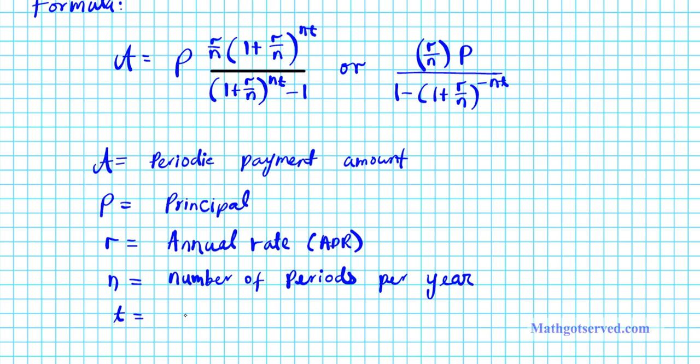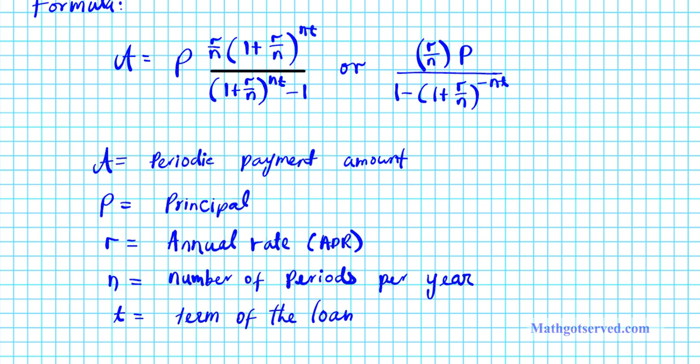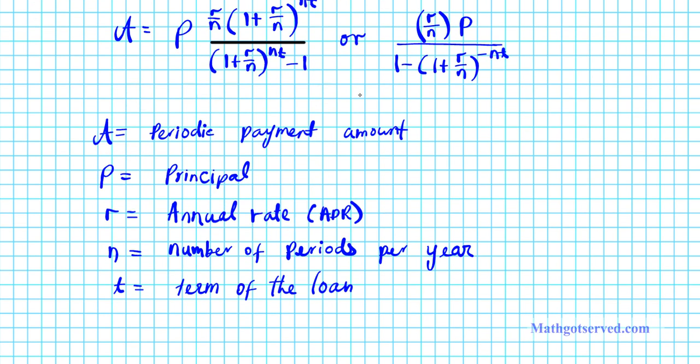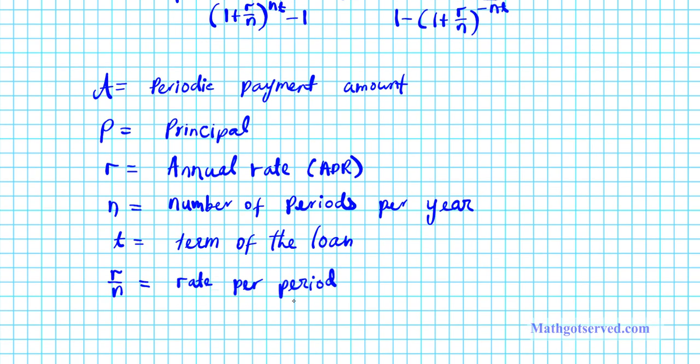So T is the term of the loan. There are also some pieces here that occur that I would like you to pay close attention to. R over N has a special significance. You see how R over N showing up here, here, here, here, and here. R over N represents the rate per period. So let's say you have a specific interest per period. So rate per period.